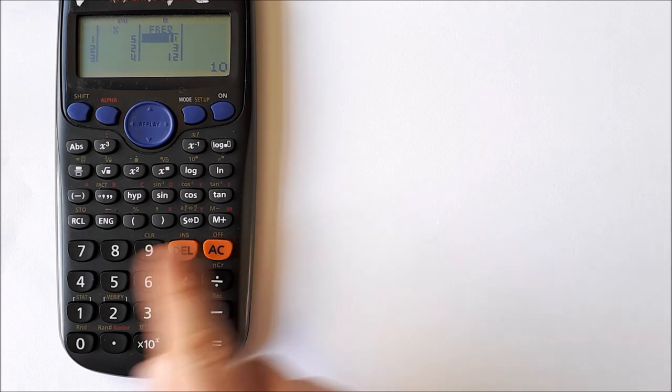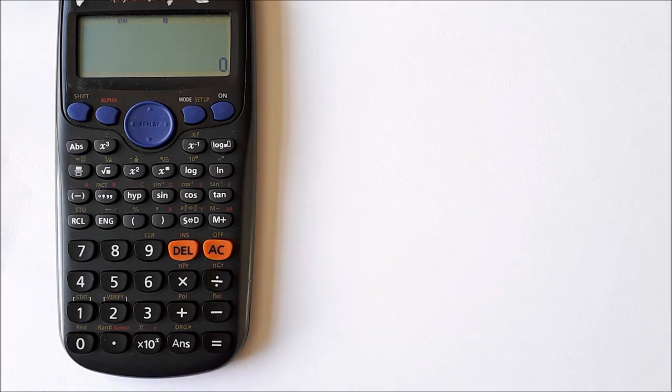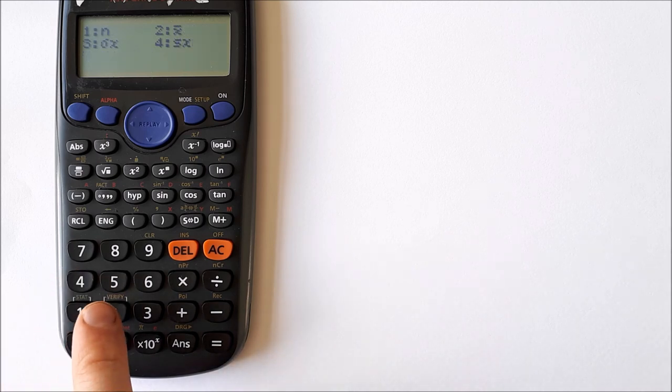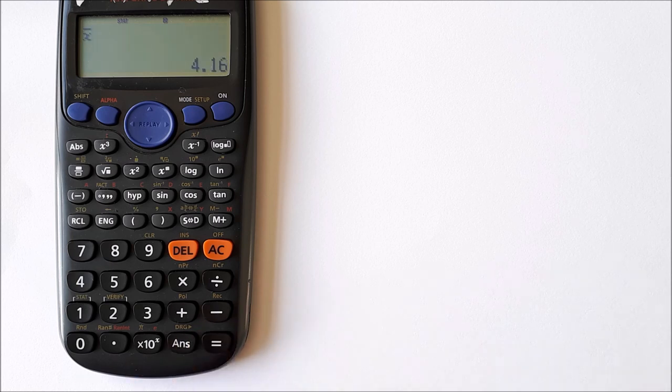Press AC to clear it. Then it's the same as before: press Shift Stats, select 4 for variables, and x-bar number 2 is our mean. Press equals.